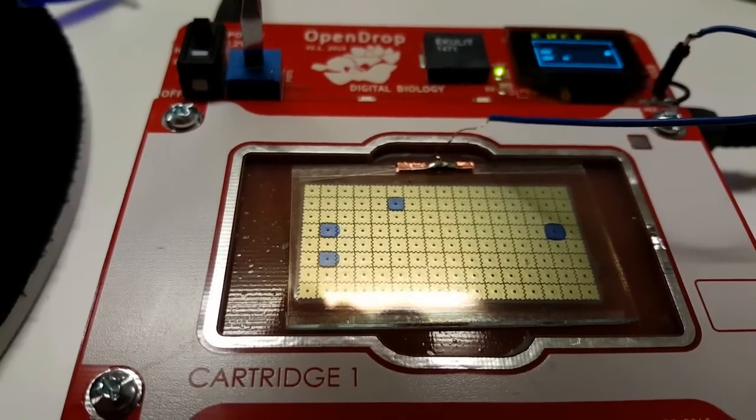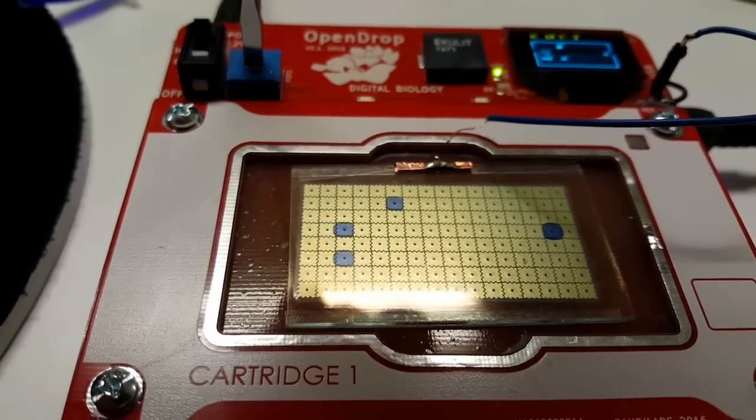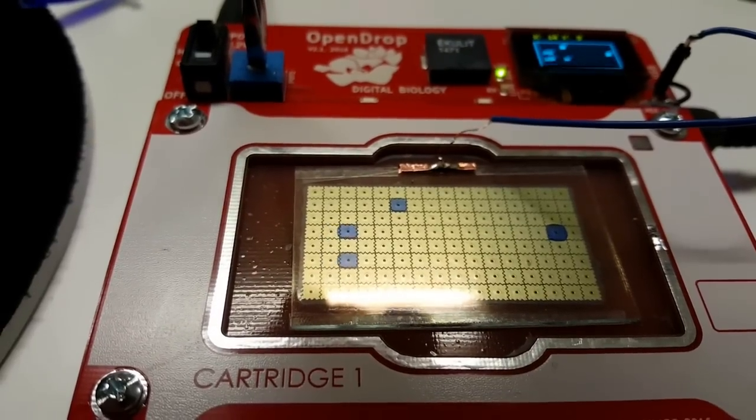As I turn up the voltage with the screwdriver, as you can see on the top left, the speed of the droplet is increasing.